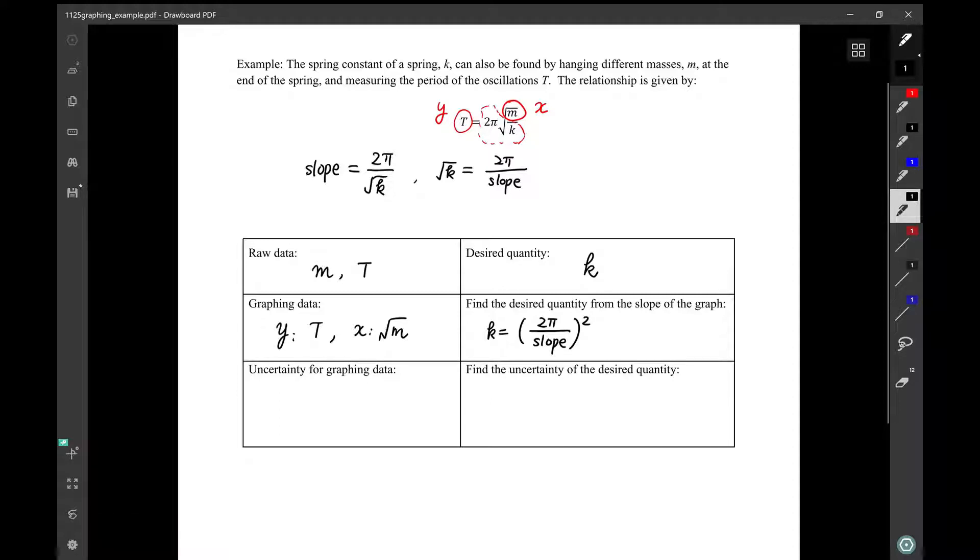We also need to know the uncertainty of the spring constant, because in the conclusion, we have to state k together with its uncertainty. To do that, we just need to apply the uncertainty propagation rules number 2. So k is 2π multiplied by 2π divided by slope divided by another slope. So we can use this: δk over k. We always do relative uncertainty. It's 2 δ(2π), which is a constant over 2π, plus 2, because there are two of them, δ(slope). Treat slope as a quantity over slope.